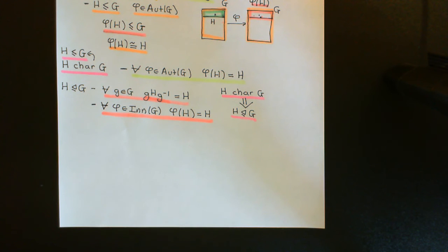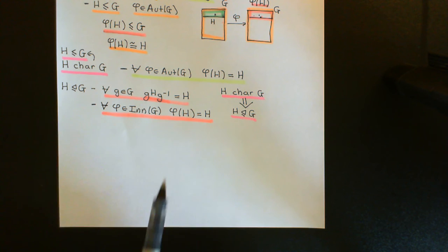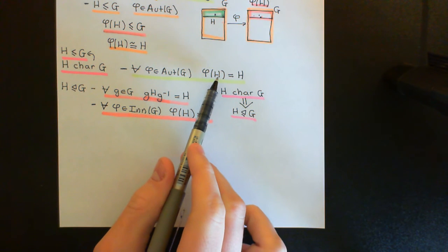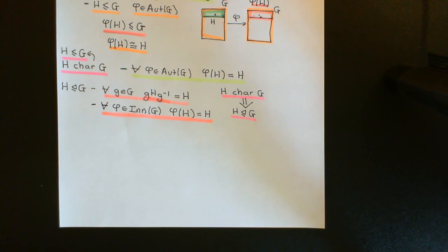Welcome back to this next video in which we are discussing characteristic subgroups. In the previous video we saw the definition of a characteristic subgroup, and we saw that it's a stronger version of being a normal subgroup. Being a characteristic subgroup means that whatever automorphism you can dream up of the larger group G, it must fix the characteristic subgroup. Whereas being normal means that whatever inner automorphism of G you can dream up, that inner automorphism must fix the normal subgroup — a weaker condition.